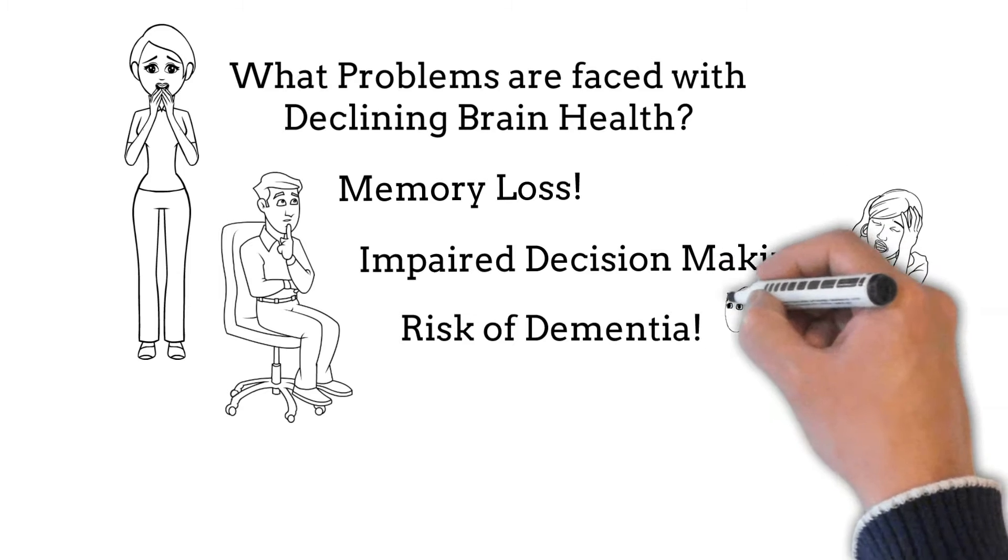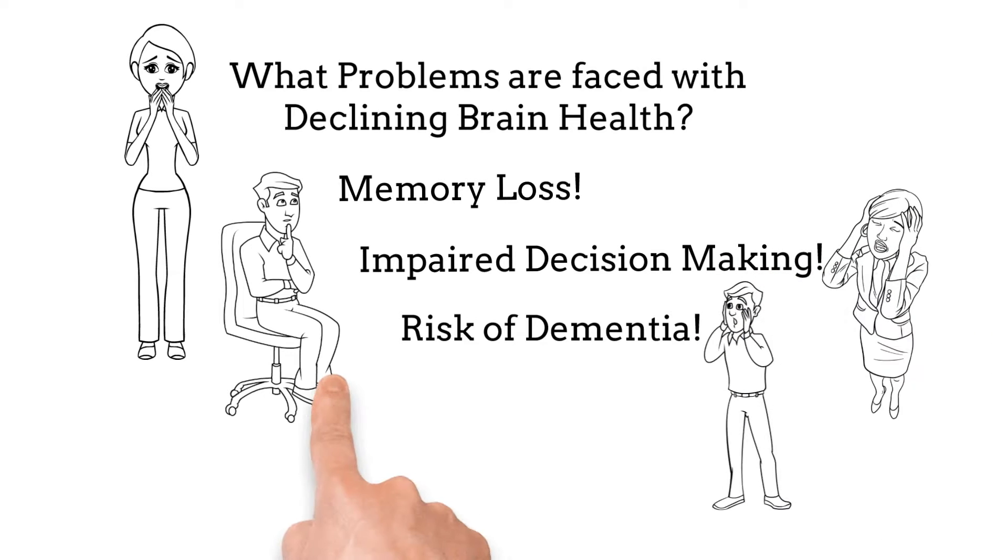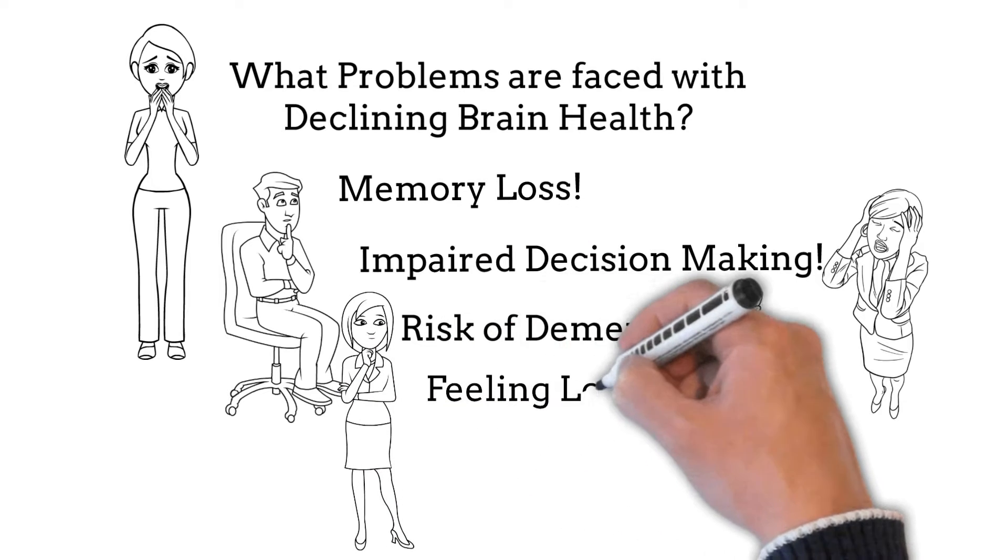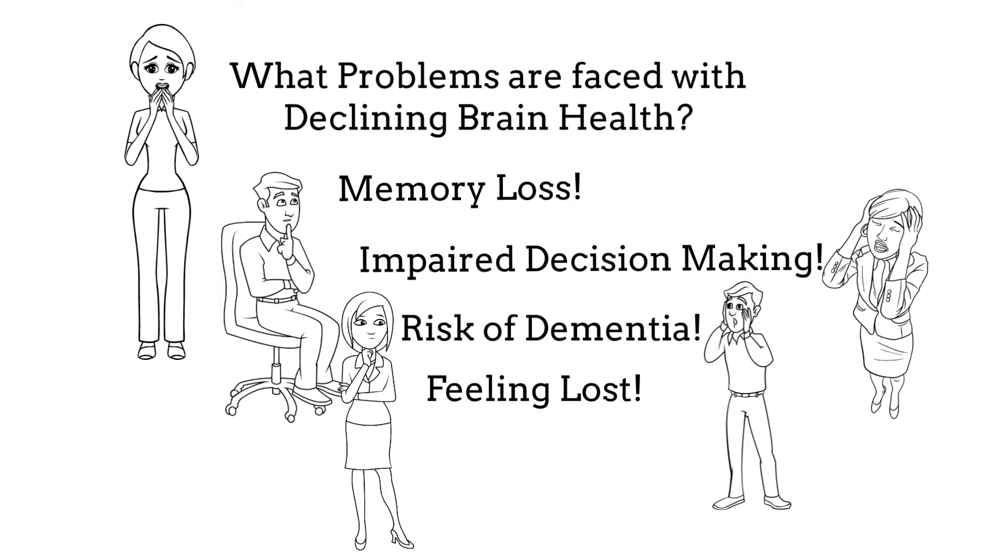When the brain shrinks, there is less white matter to connect different parts of the brain. This leads to slower communication between areas of the brain. Brain regions that are not connected properly can stop working as well.